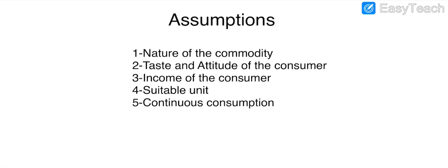Let's explain the assumptions of the law. Number one is the nature of the commodity. For the law to be accurate, we assume that the nature of the commodity — meaning the quality and type of the product the consumer is using — does not change. As seen in the table, we take additional units of apple: one, two, three, four, five, six — every time we take units of apple, we do not change the commodity. The nature of the commodity remains the same.